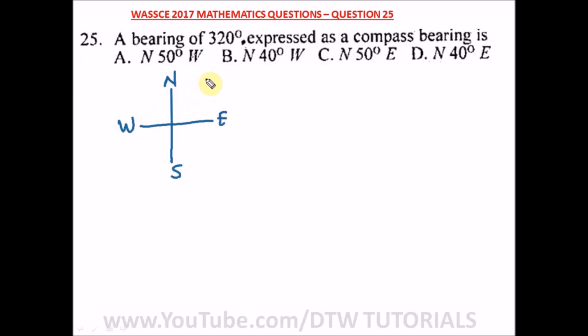To convert your three-digit bearing to compass bearing, you have to start from the north and go in the clockwise direction. You don't go in anti-clockwise direction like we normally do; you have to go in the clockwise direction.